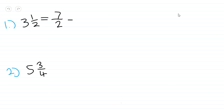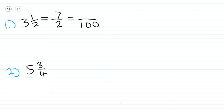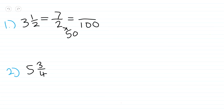To do that, we have to make an equivalent fraction with 100 as the denominator. So with 100 as the denominator, we ask ourselves: how many times does two go into 100? Two goes into 100 fifty times. So we write 50, which is essentially saying two times 50 equals 100.